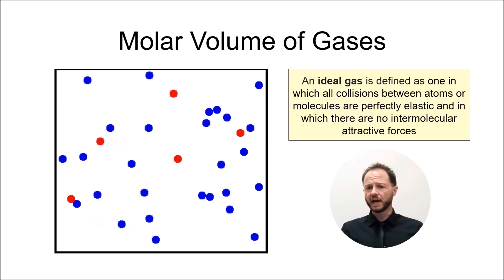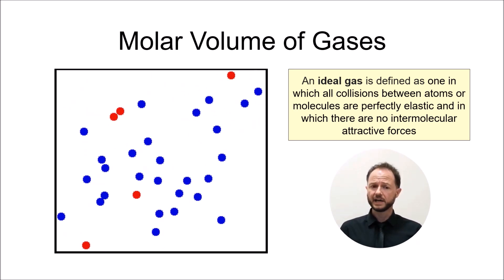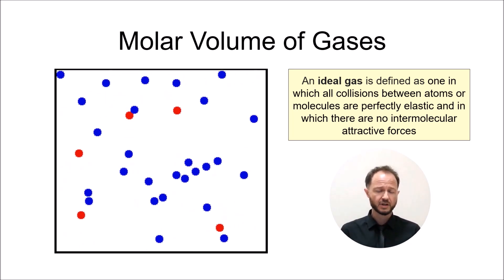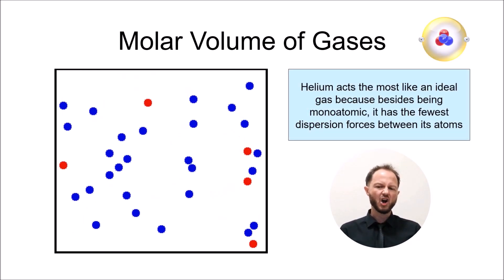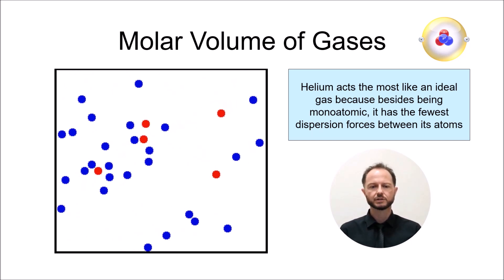Side note, it's called the ideal gas law because it applies to ideal gases and if you decide to take chemistry beyond A-level, you'll be told they don't exist. To be fair though, many gases behave almost ideally, especially at high temperatures and low pressures.